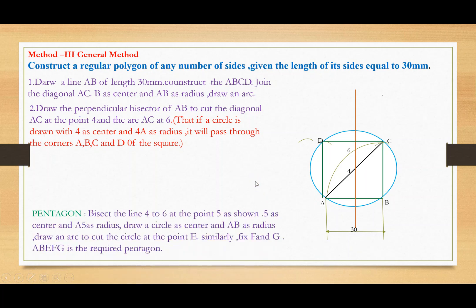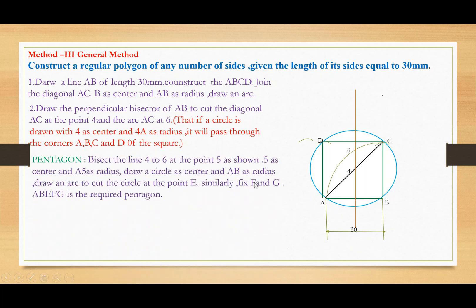For the pentagon: bisect the line between points 4 and 6. The square is drawn with 4 as radius and center. To find the fifth point for the pentagon, find the midpoint between 4 and 6, which is point 5.